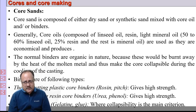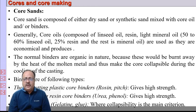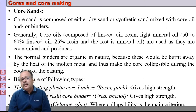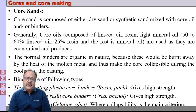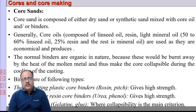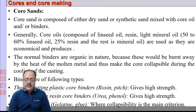Linseed oil consists of around 50 to 60%, resin is 15 to 25%, and the rest is mineral oil. The binders are of various types; depending on the strength required, different types of binders are selected. These binders acquire their binding property when the core is baked. Thermosetting plastic core binders and thermosetting resin binders give high strength, while protein binders are used when collapsibility is the main criterion.